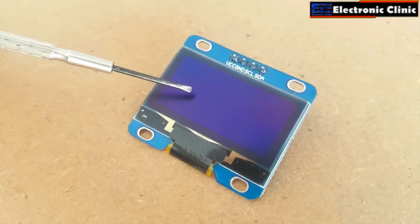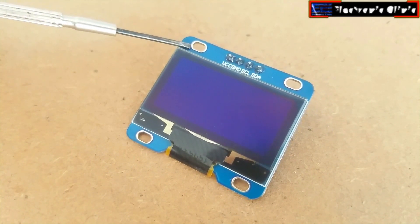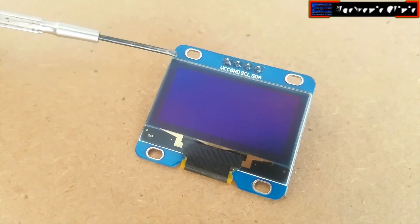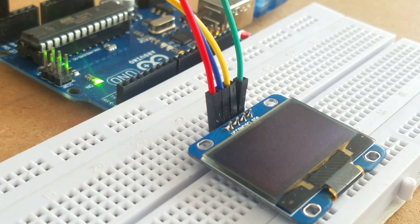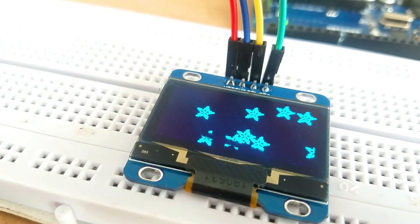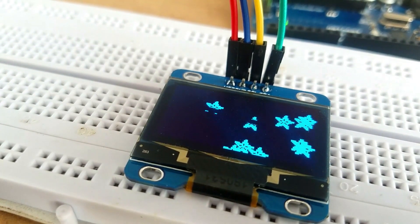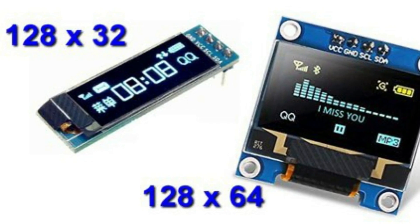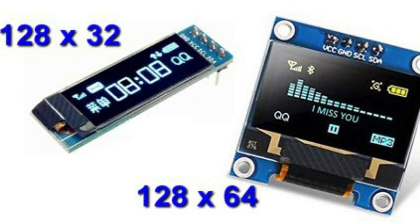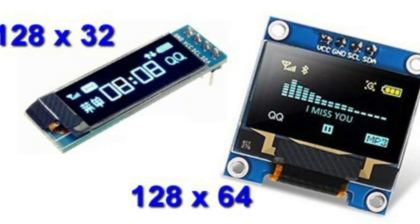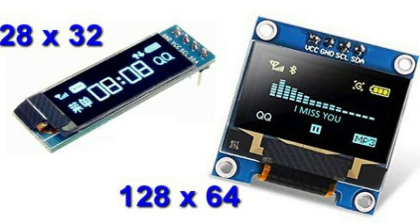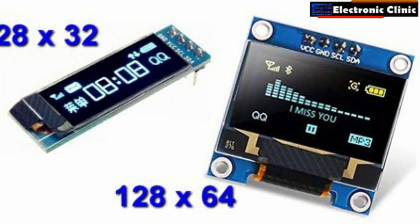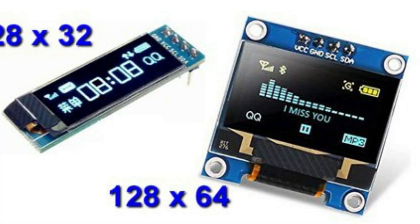Only by looking at the OLED display, it's really hard to tell whether it is an SSD1306 or SH1106 model — I will tell you in a minute how to find this. Unlike the 16x2 liquid crystal display module, the OLED display does not require a backlight, which results in very nice contrast. Moreover, the OLED display consumes less power compared with other displays. There are also OLED displays that support SPI communication, but in this tutorial I will only focus on the OLED display module that supports I2C communication.